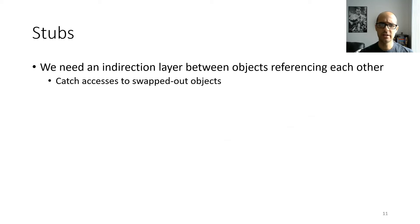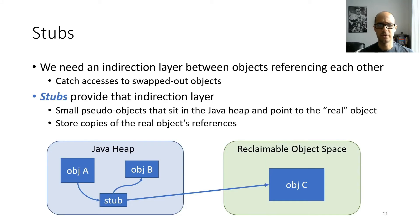We need an indirection layer between objects referencing each other so we can catch accesses to swapped-out objects in app code and swap them back in. For this we use stubs — small pseudo-objects that sit in the Java heap, point to the underlying real object, and also store copies of the real object's references. We found that in Android apps, references tend to take up a pretty small portion of objects' memory footprints, so storing copies of references in the stubs allowed us to keep the stubs small.